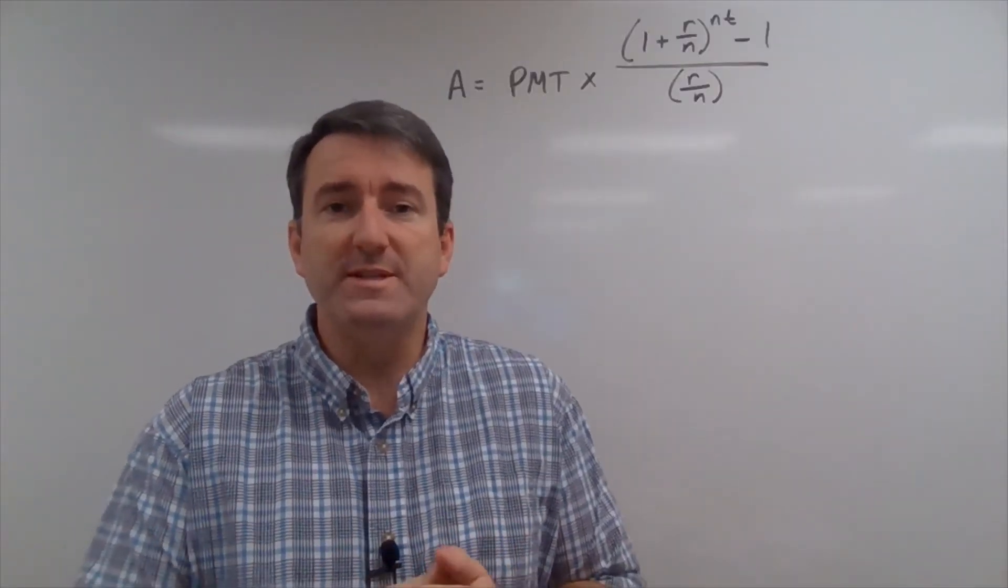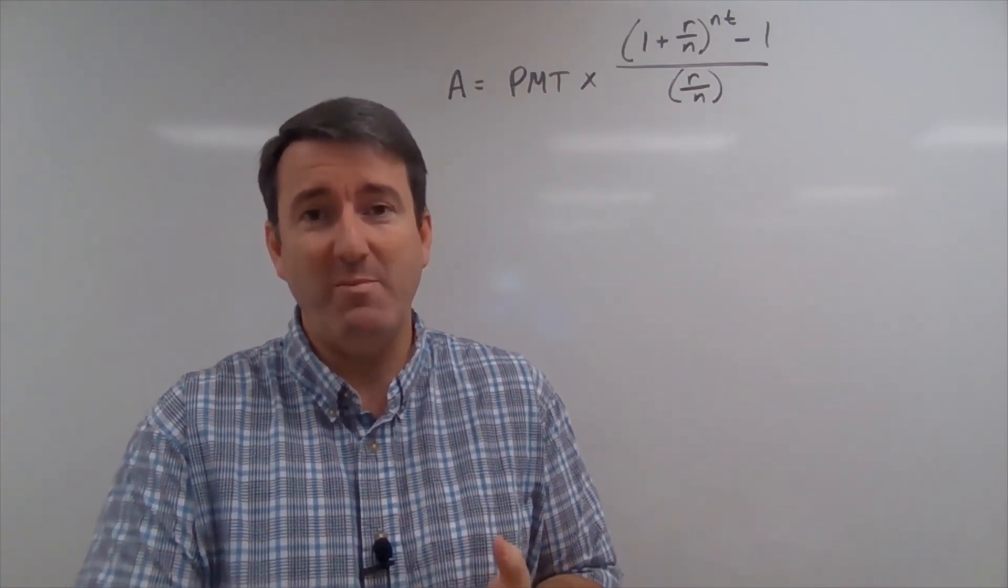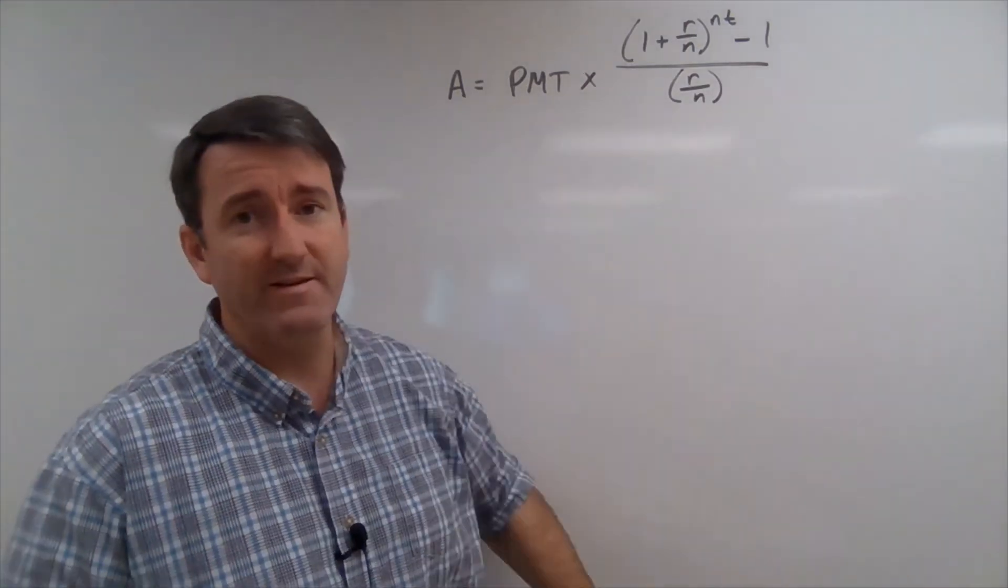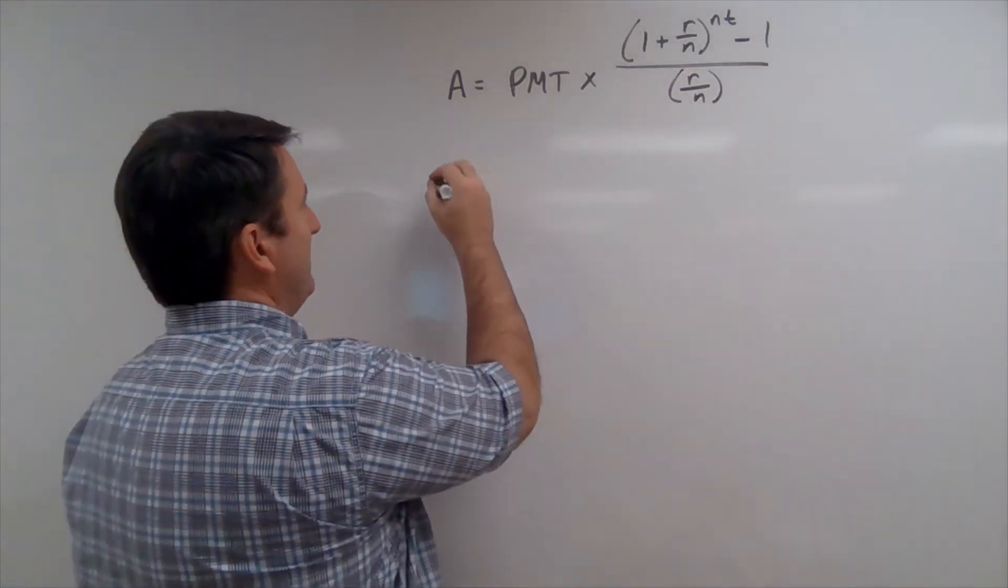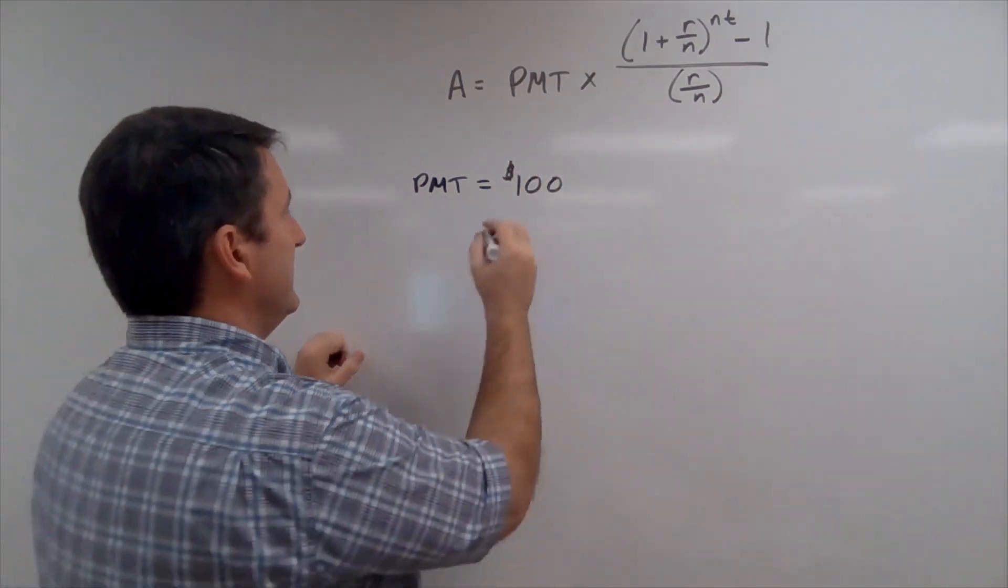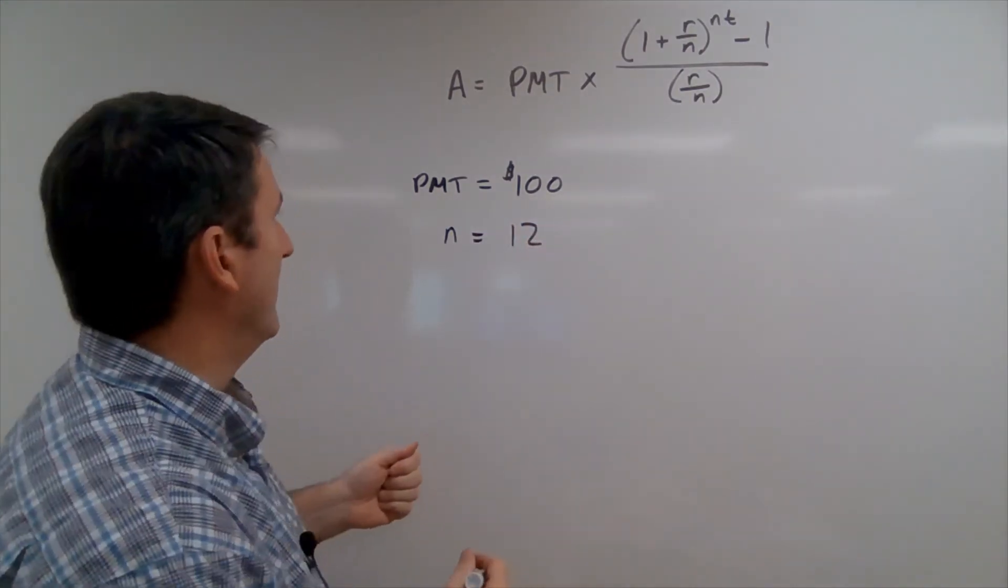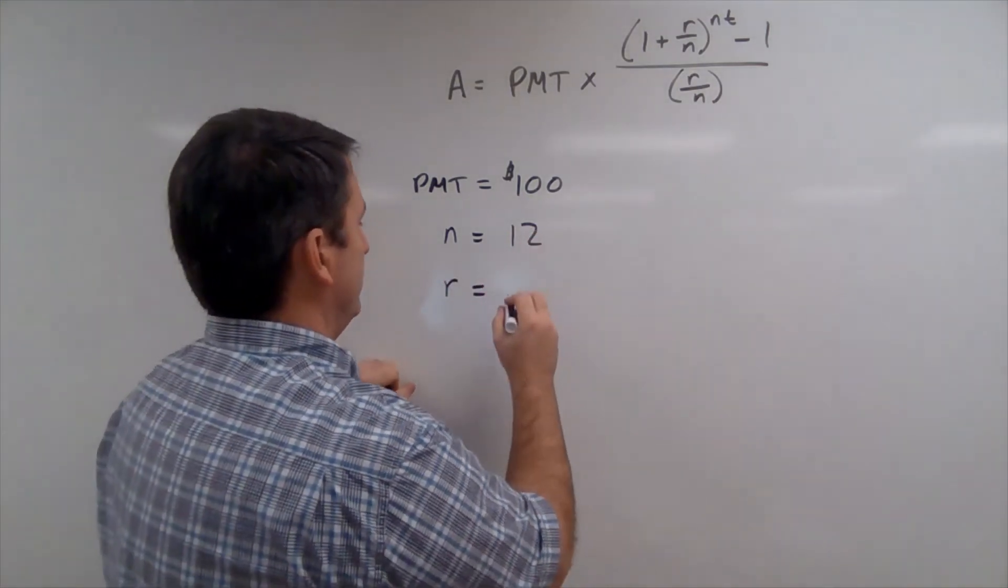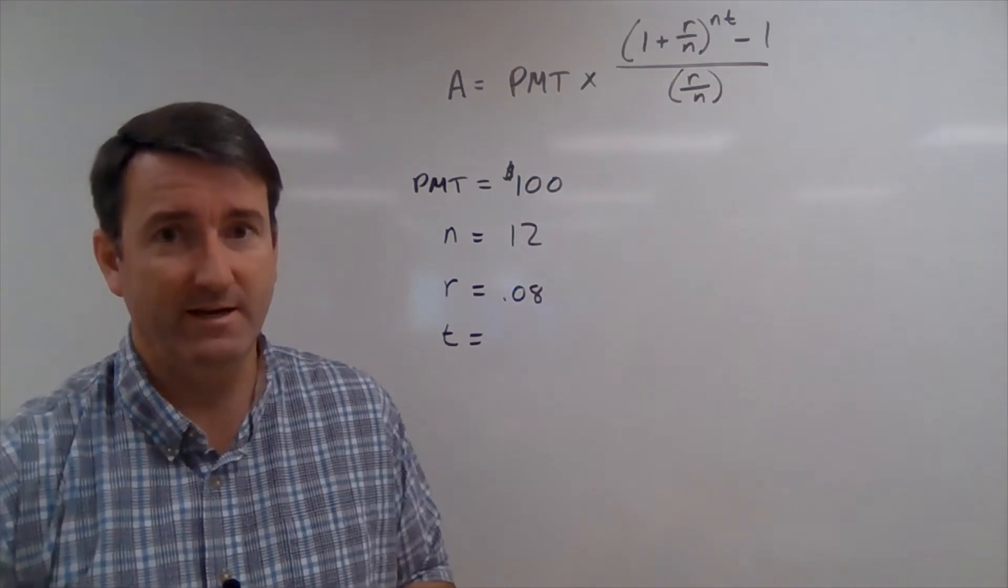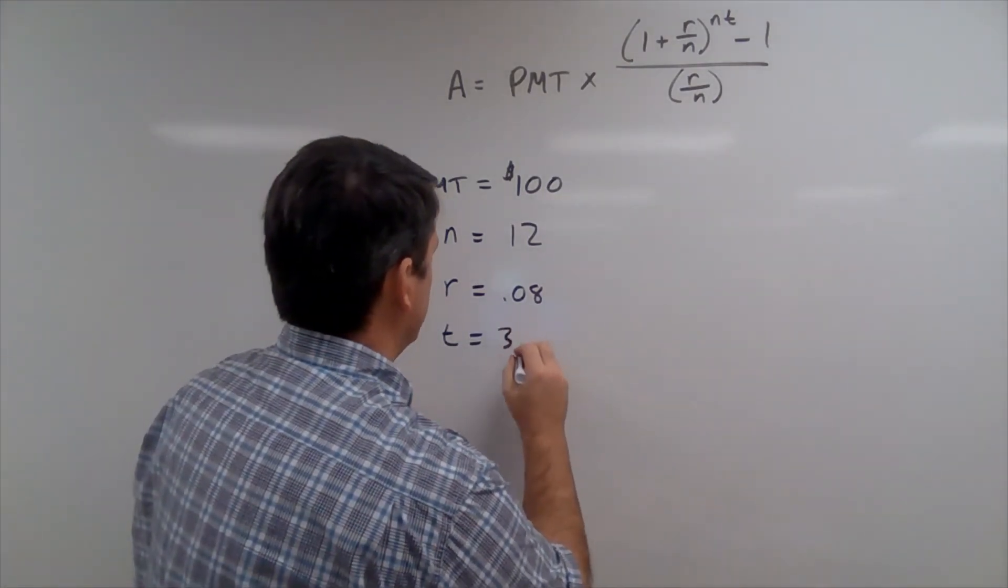Our example asks us to use the savings plan formula to calculate the balance after 3 years and 6 months in an account with an APR of 8% and monthly payments of $100. So here is our savings plan formula. Our PMT, our payment, is going to be $100 per month. And because it's monthly our n is going to be 12. We're going to be making 12 payments per year. The r is going to be 0.08, that's 8% as a decimal. And then the t is time in years. We're told that it's going to be 3 years and 6 months, so that's 3 and a half years. So the t will be 3.5.